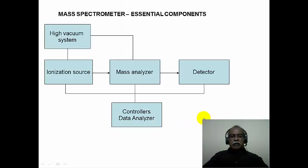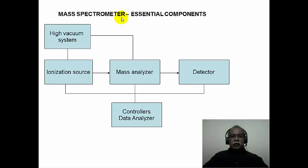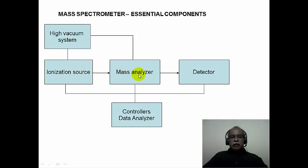A mass spectrometer essentially consists of five components. First, a high vacuum system, because mass spectrometry deals with ions generated in the gas phase. A vacuum of the order of 10⁻⁶ to 10⁻⁹ torr is required. Then there is an ionization source — depending on the technique, different ionization sources are involved. The ions generated in the ionization source are fed into the mass analyzer.